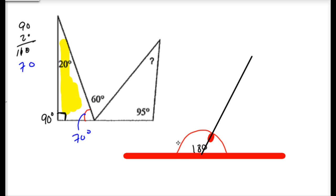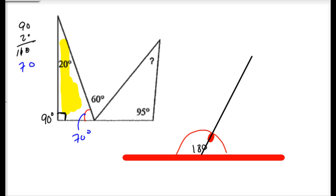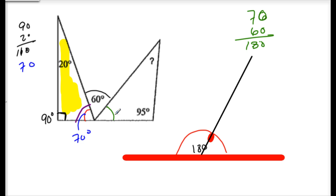Now look at this bottom straight line — it's a straight angle, so these three angles together equal 180 degrees. If I know this one is 70 and this one is 60, then 70 and 60 is 130, so the missing angle here has to be 50 degrees.